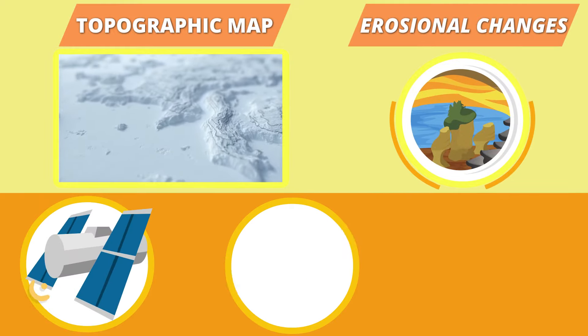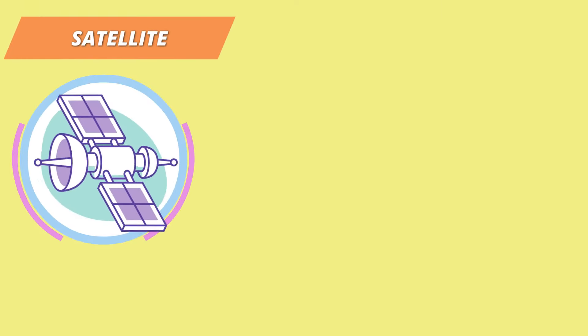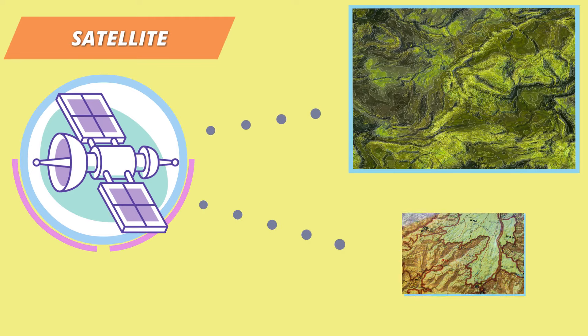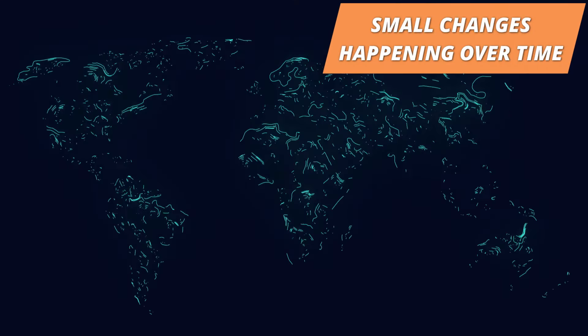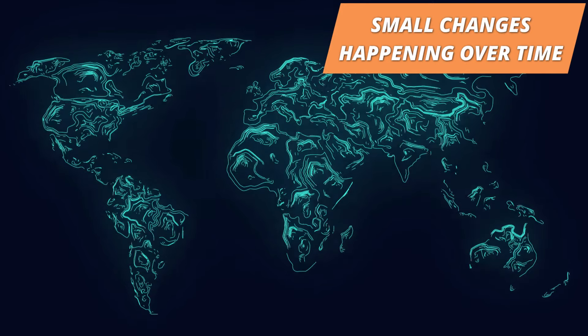The most crucial and useful tool for creating topographic maps and understanding the erosional changes are satellites. Satellites are able to provide high-resolution images of large-scale land feature patterns, allowing scientists and researchers to see even small changes over time.